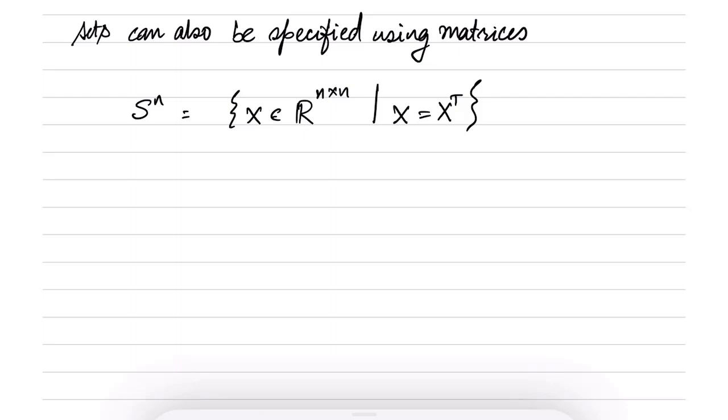Now if you look carefully, this is nothing but specifying a certain number of restrictions on the entries of x. So another way to write this set is that set of all x in R^(n×n) such that X(1,2) is equal to X(2,1).